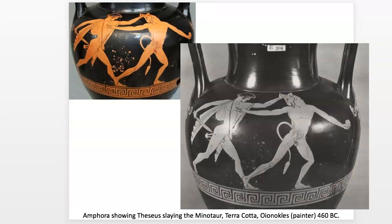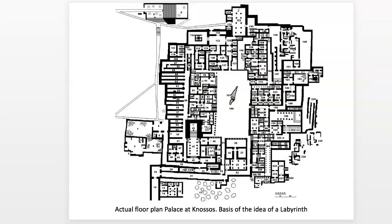In their mythology, Theseus kills the Minotaur, so there's no longer a tribute needed. He found his way out with the help of the king's daughter and a spool of thread used to mark the path in and out of the labyrinth. This connected to the site in Crete — the Palace of Knossos — which is thought to be the original that the myth is based off of. You can see by looking at the actual floor plan how it could very much be thought of as a labyrinth or a maze that's very complex.